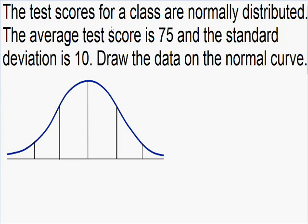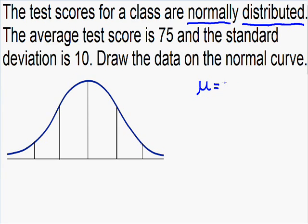In this problem, it says that the test scores for a class are normally distributed. This needs to be given to us, or you need to make a safe assumption that the data is normally distributed. The average test score is 75, which we write with the Greek letter mu. The standard deviation is equal to 10, written with the Greek letter sigma.